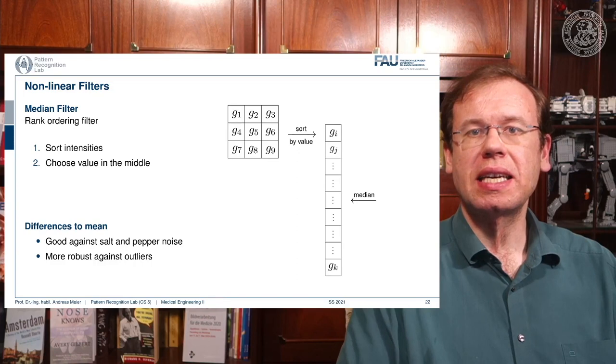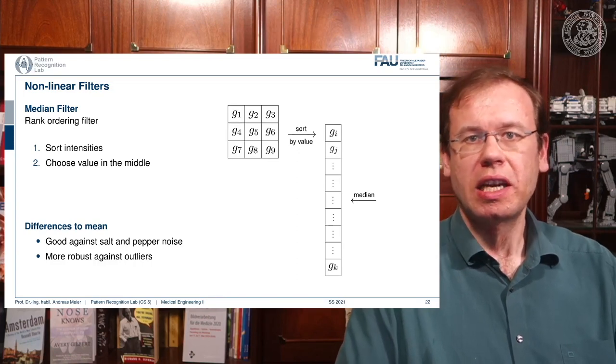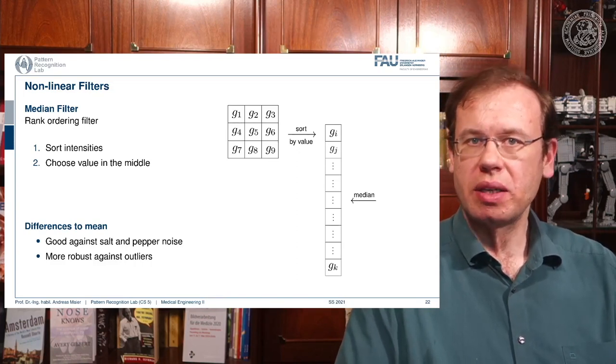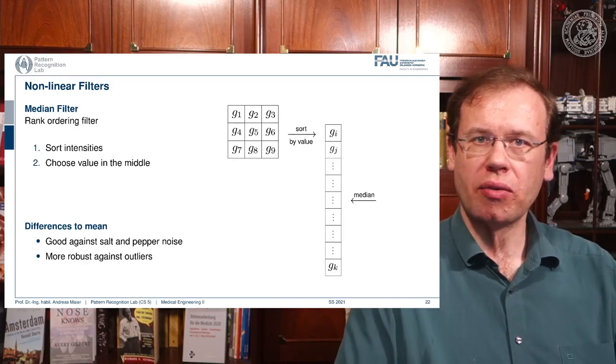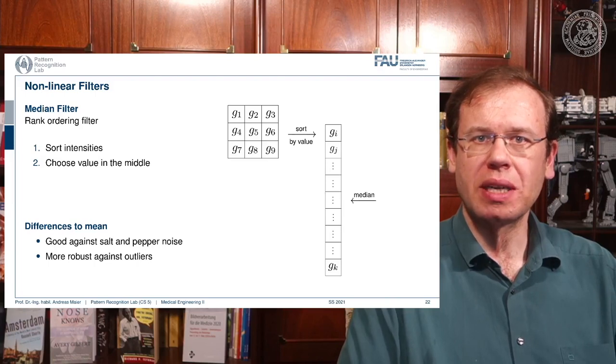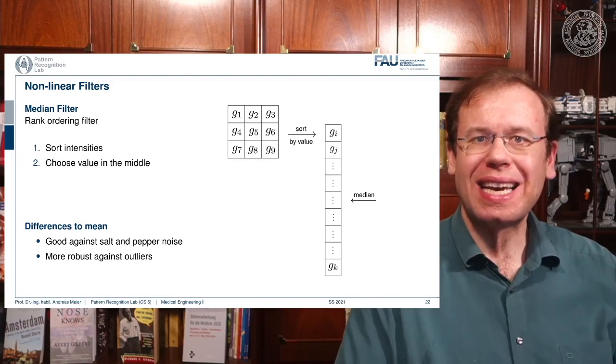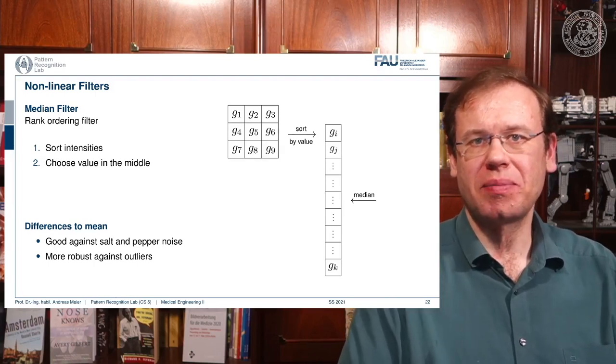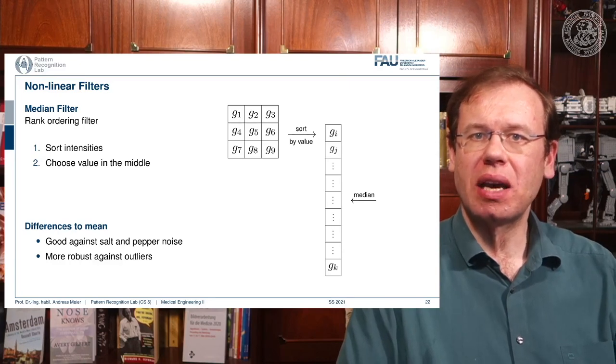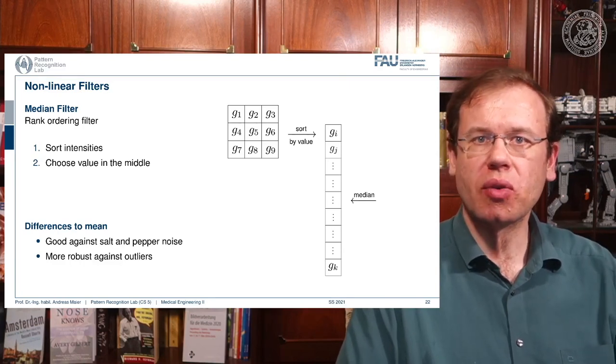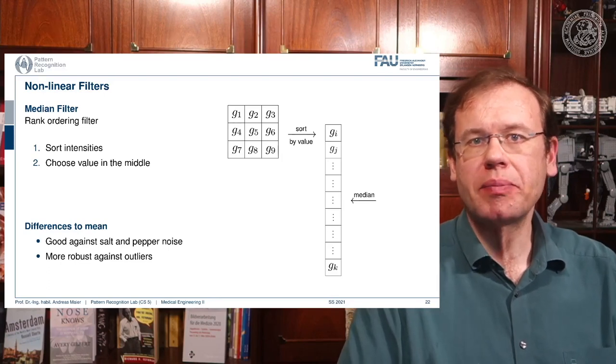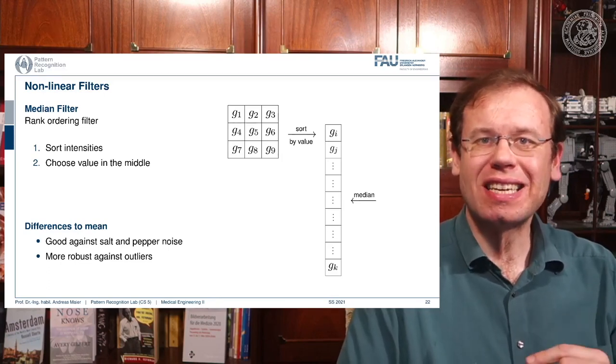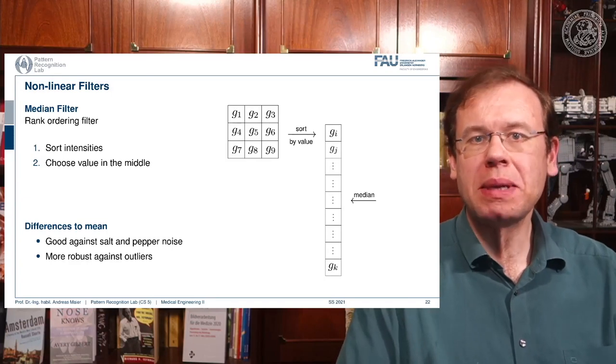We are using again a three by three neighborhood, but this time we take all of the elements in the three by three neighborhood and order them in ascending fashion. So this means that we have to sort, for example using quick sort, in order to get the sorted array. And then we pick the center value, which is the median of the set.